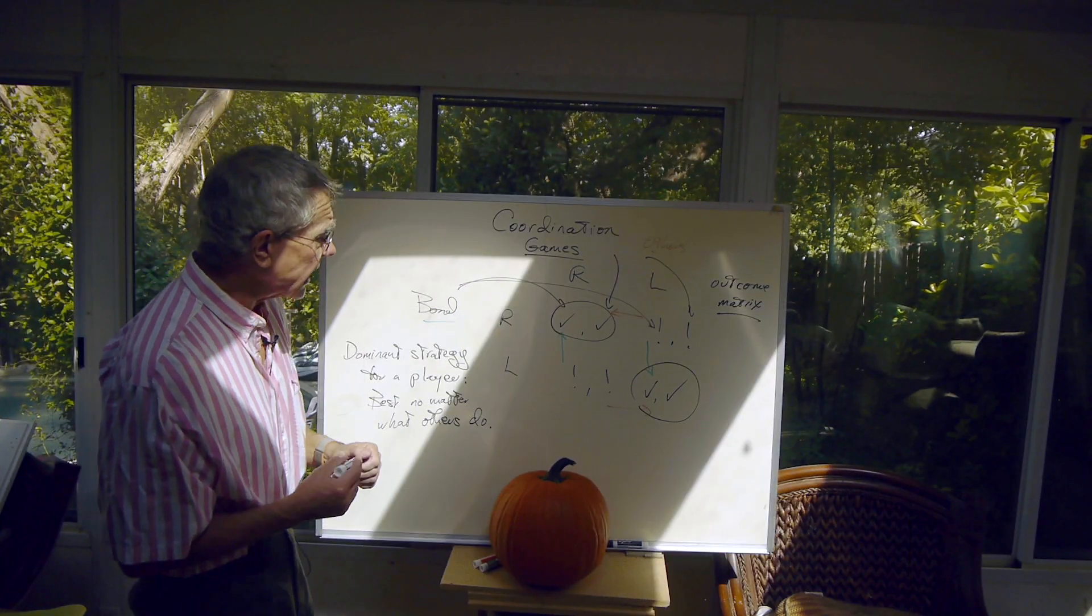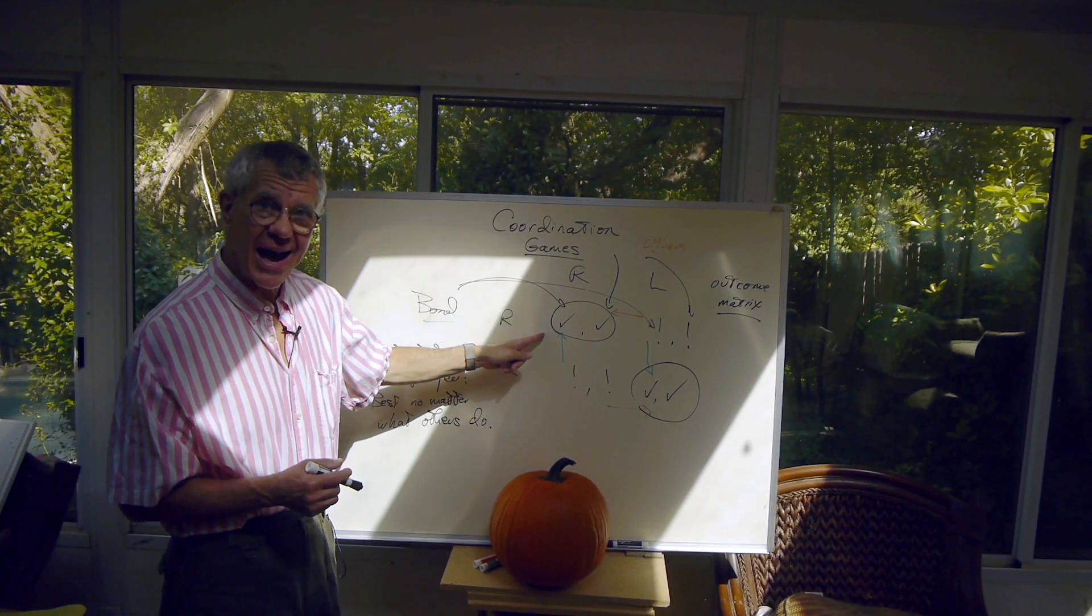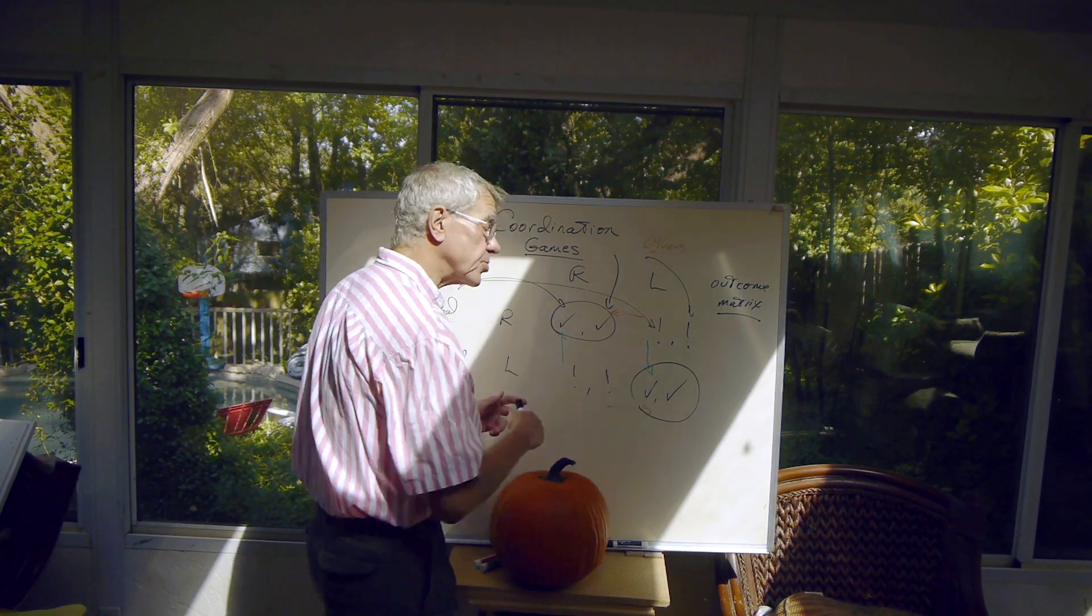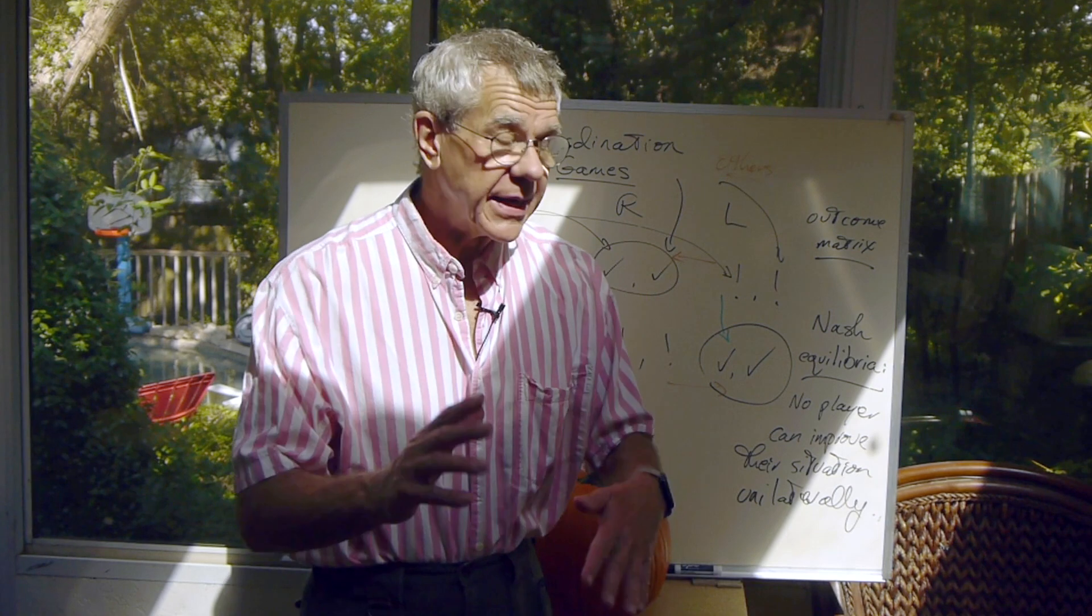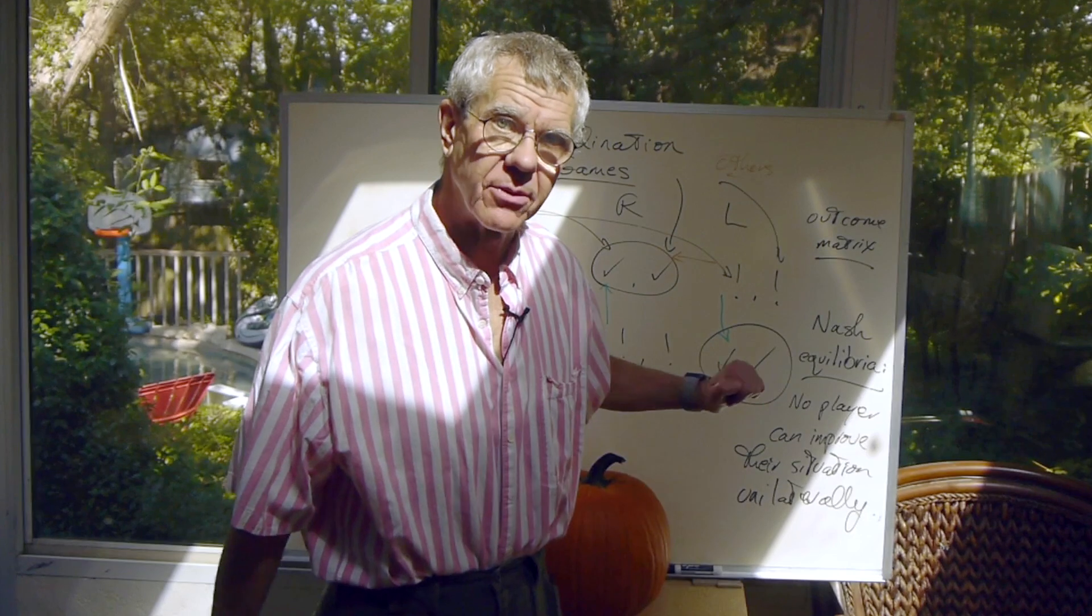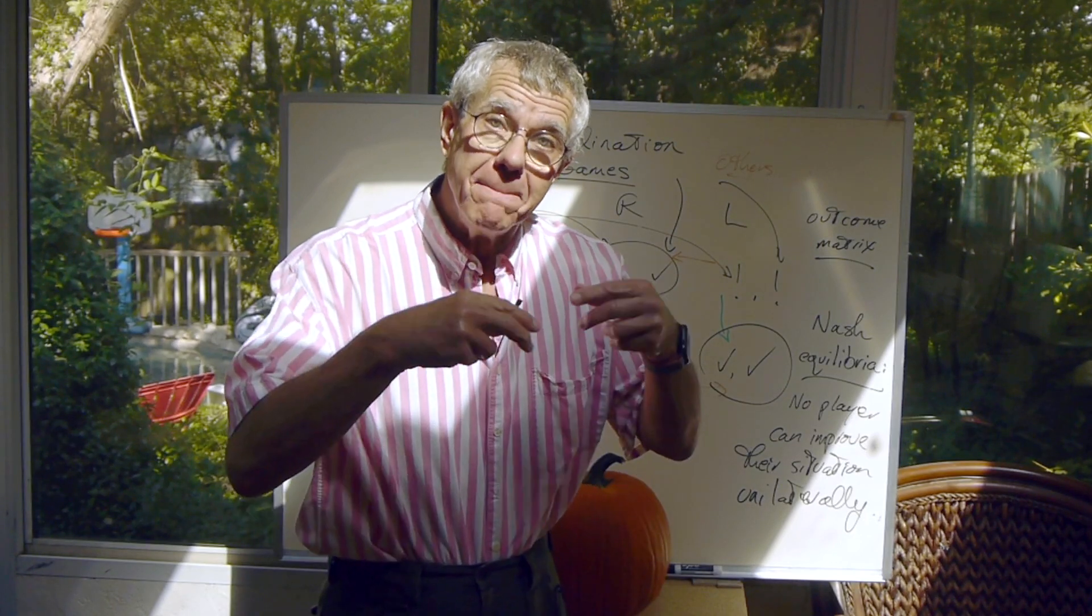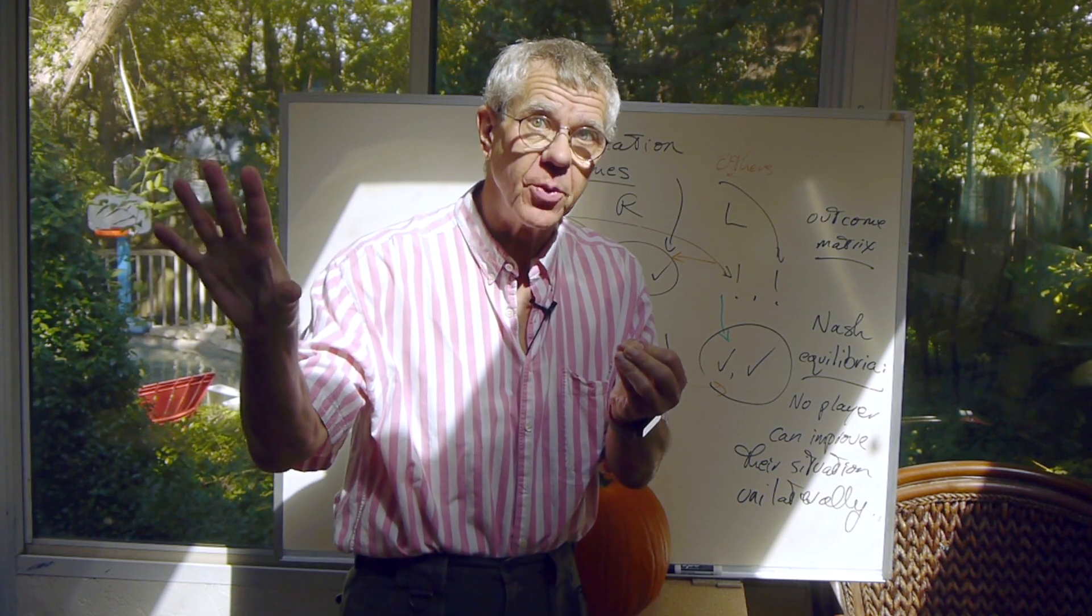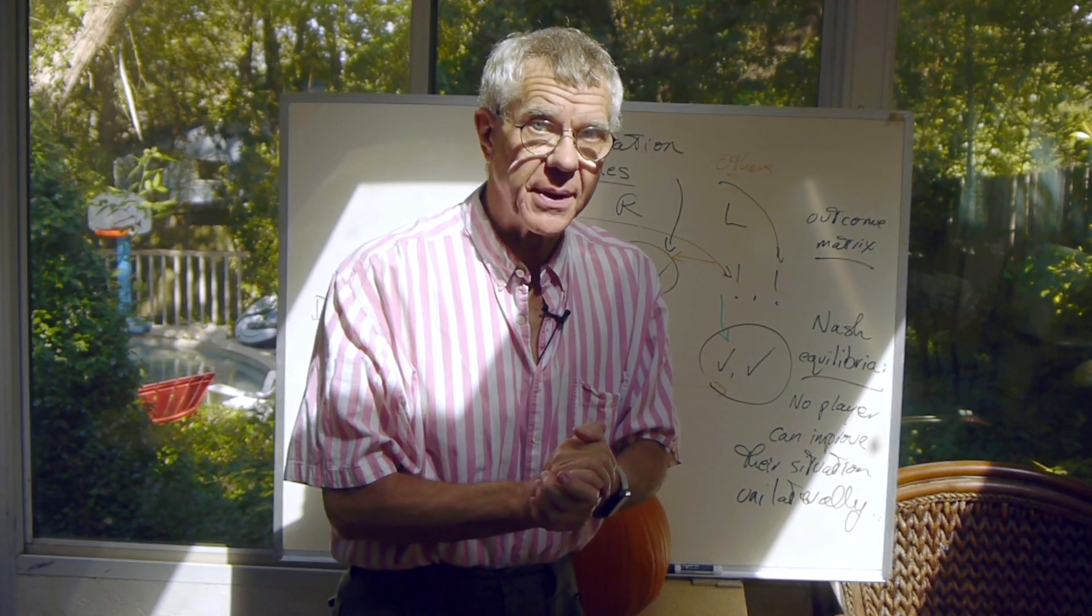There are, nevertheless, two important outcomes here. This one where both drive on the right, and this one where both drive on the left. In a Nash equilibrium, no player can improve their own situation unilaterally. No player can make a change just in what they're doing, keeping fixed what everybody else is doing, and make themselves better off.